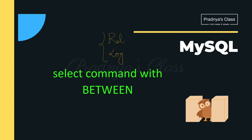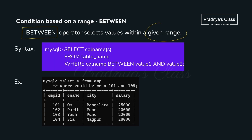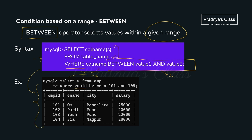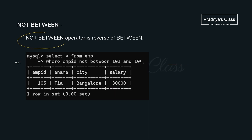Now we will check out the BETWEEN operator with the SELECT command. BETWEEN is used to select values from a given range. The syntax is: WHERE column_name BETWEEN value1 AND value2. For example: SELECT * FROM employee WHERE employee_id BETWEEN 101 AND 104. Both limits are inclusive — records from employee ID 101 to 104 are displayed. There is also NOT BETWEEN, which is the reverse — it excludes the specified range.